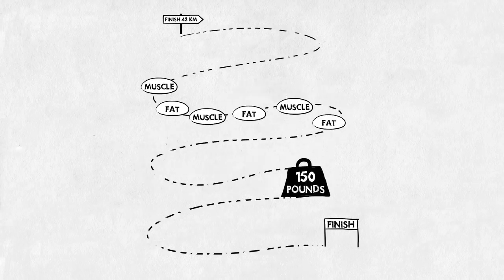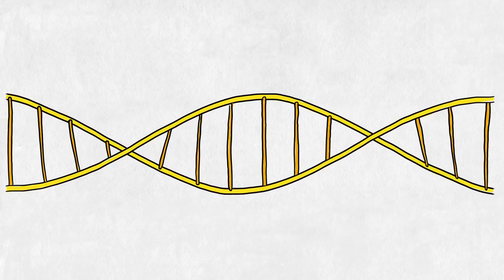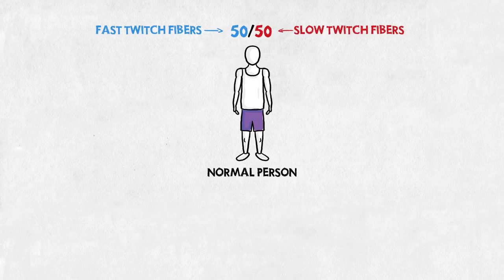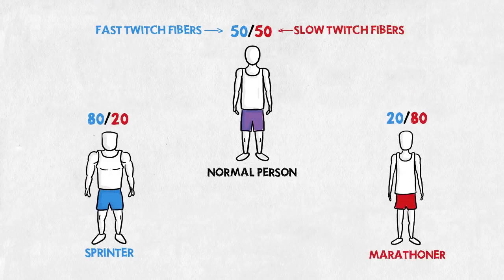That's why he looks so skinny. On top of the difference in training, genetics also play a part. A normal person has about an even amount of fast and slow twitch fibers. But the persons that make it to the top tend to have more of one kind. So even untrained, they wouldn't have the same physical appearance.